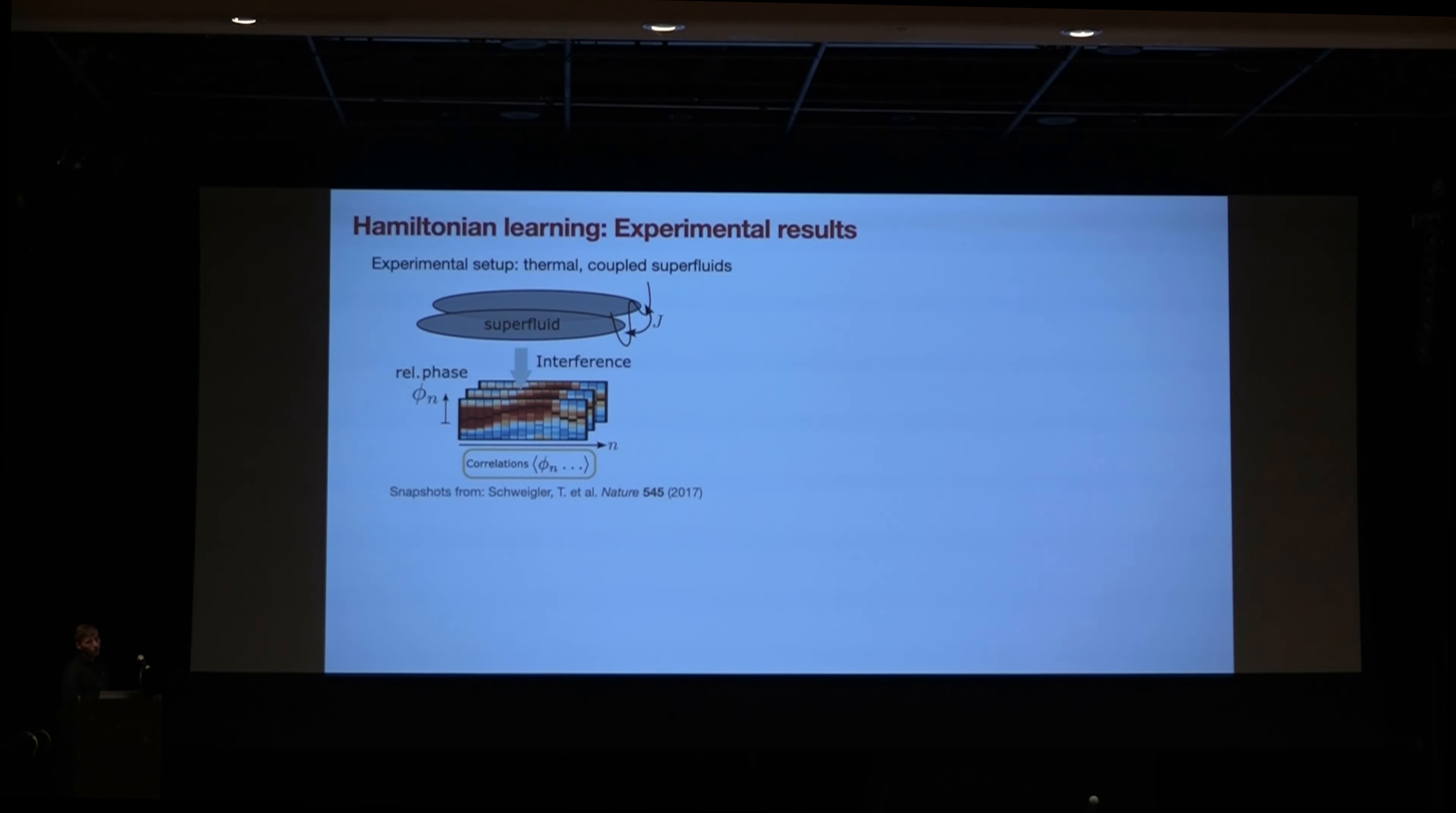And so basically what they do is they let them interfere, and then you get these snapshots of data over here, where you can define the relative phase, which will be the relevant degree of freedom in this case. And it's actually, as described before, you can make these correlation functions, which will be the input data for our analysis. And then to show that we're actually able to distinguish this sine-Gordon theory from other possible potentials, we are looking at three different ones.